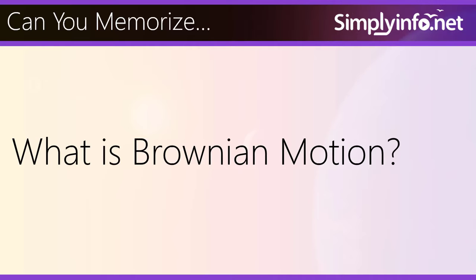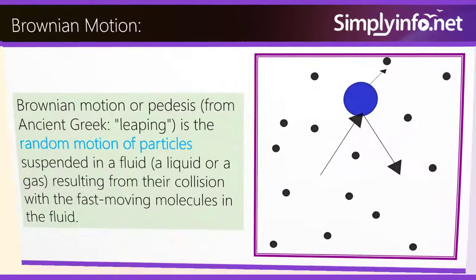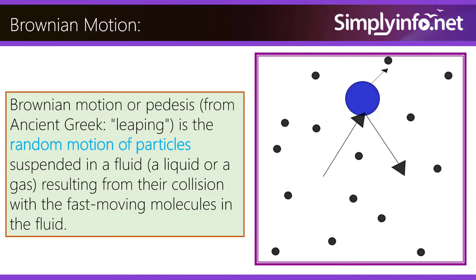So, can you memorize what is Brownian motion? Brownian motion, or pedesis, from ancient Greek meaning 'leaping', is a random motion of particles suspended in a fluid — including a liquid or a gas — resulting from their collision with the fast-moving molecules in the fluid.